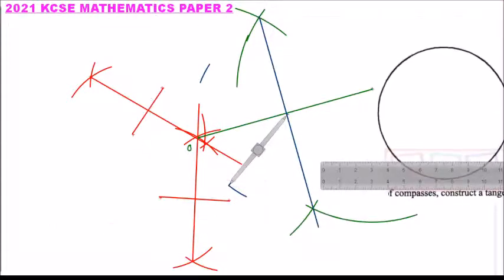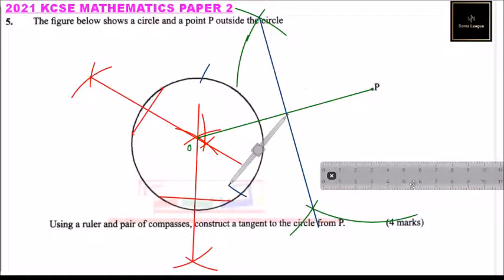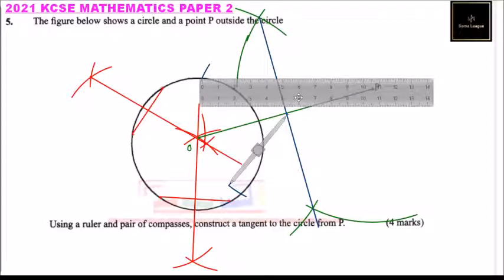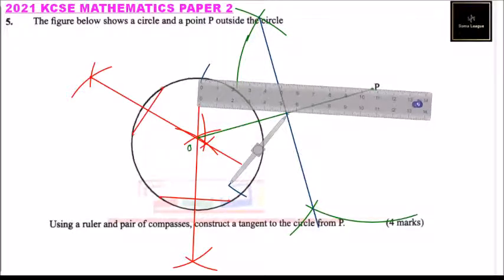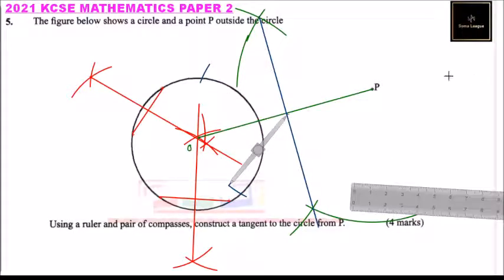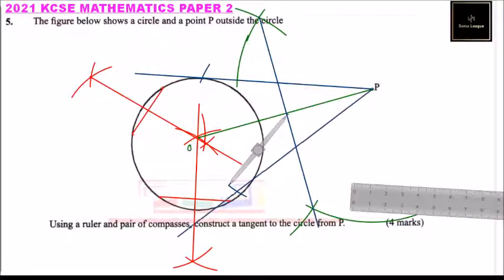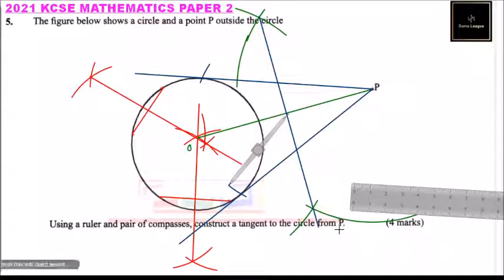With those two marks, you use them to draw the tangent. Draw the tangent which passes through that particular point using your ruler, and this other one passes through as well. So those are the two tangents we need — they pass through from point P. By doing that you will be able to get four marks, and that is how you do this question.